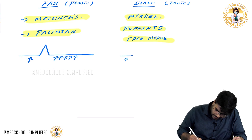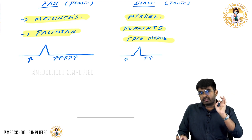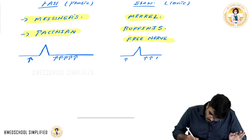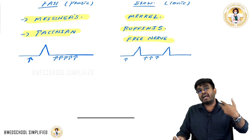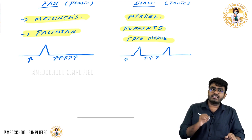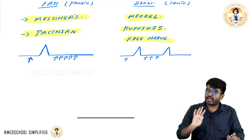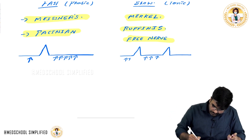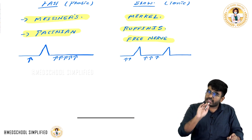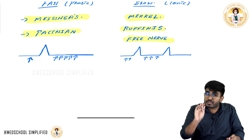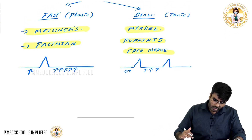So in summary: fast adapting means — stimulus given, action potential generated, then even with continuous stimulus, no further action potential generated. In slow adapting receptors — stimulus given, action potential generated, then a pause, but then if stimulus continues, action potential is generated again. So those are the examples of slow adapting tonic receptors.